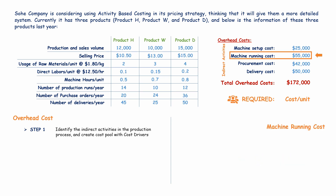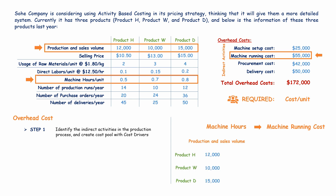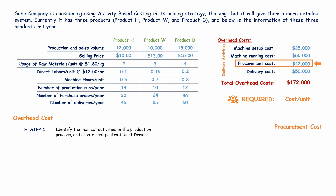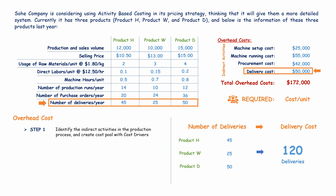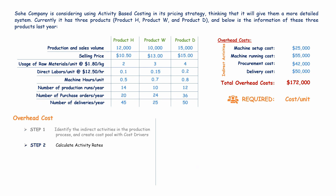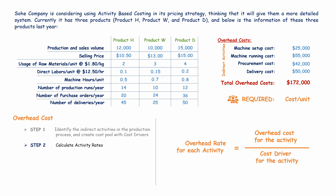Machine running cost is determined by machine hours. Note that machine hours are calculated using total sales volume per product multiplied by machine hours per unit. Procurement cost is determined by purchase orders, and delivery cost by number of deliveries. With the total cost drivers identified, we move to step two: calculating activity rates by dividing the overhead cost for each activity by the total cost driver for that activity.